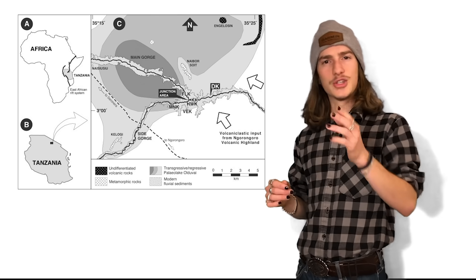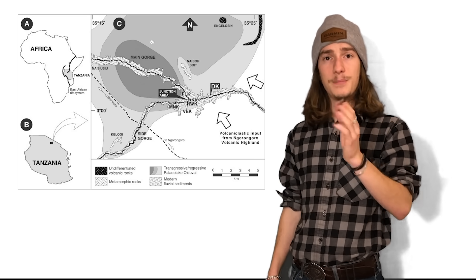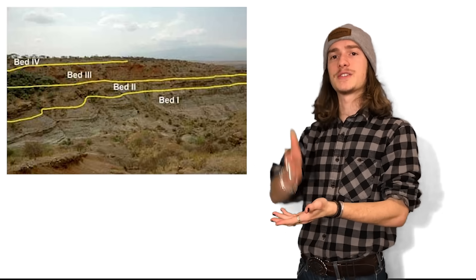But today, Oldoway Gorge is no longer a lake. It is a rift valley, and it stretches nearly 30 miles end to end and can be almost 300 feet deep. Because of this, we have a literal cross-section of the earth.